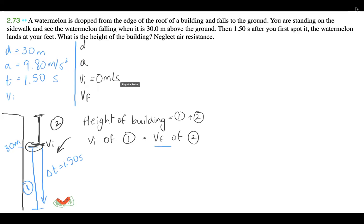So that's zero meters per second. Then we have the 9.80 meters per second squared. And then VF is going to be equal to VI1.